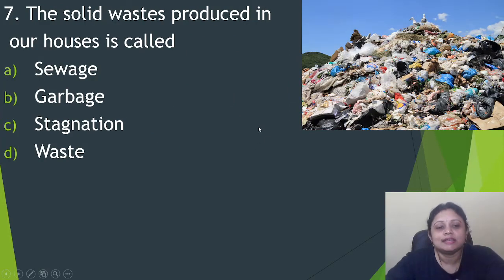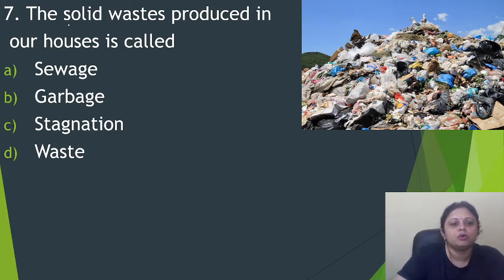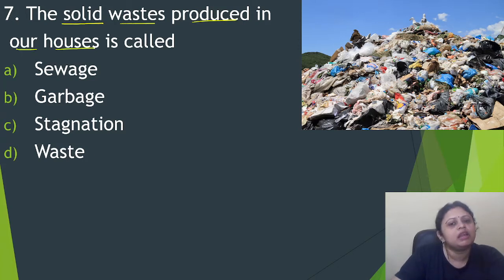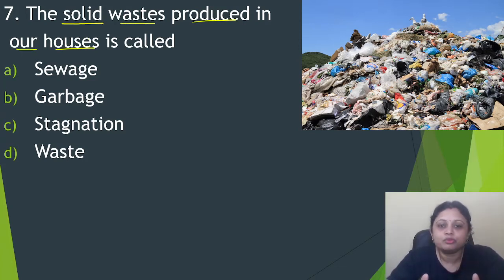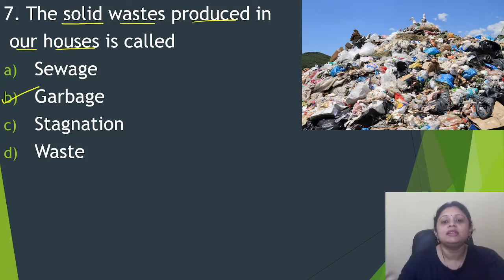Next question: the solid waste produced in our houses is called? Option A, sewage. B, garbage. C, stagnation. D, waste. In our houses, a lot of solid waste is produced, and we call them garbage. So the correct answer is option B, that is garbage.